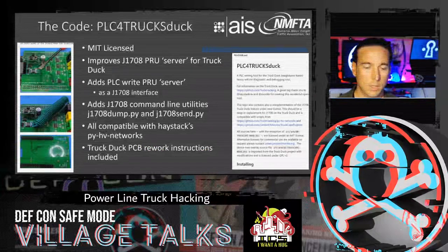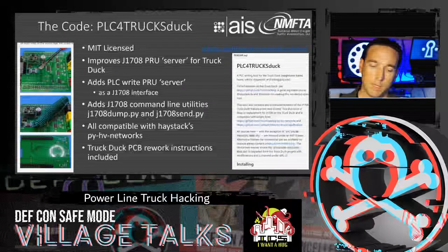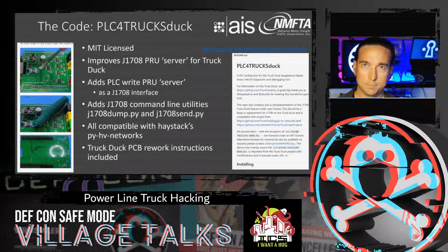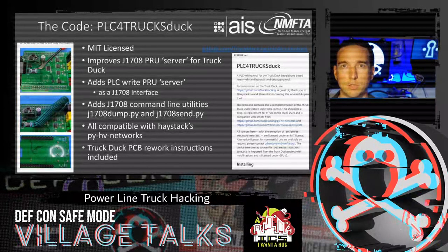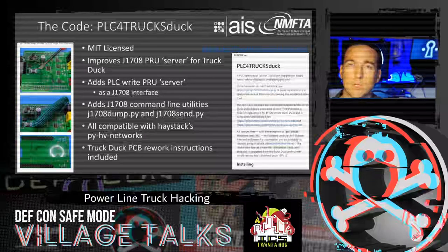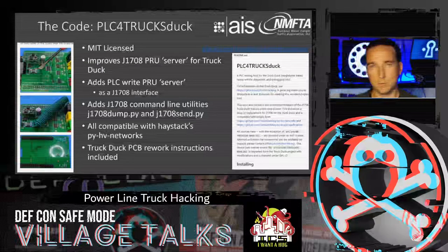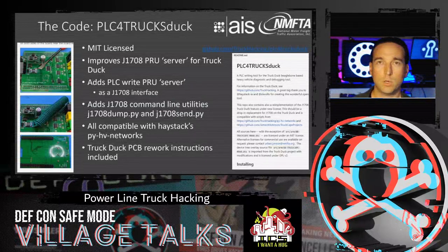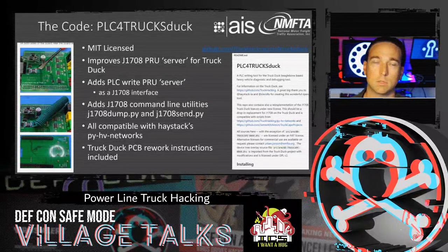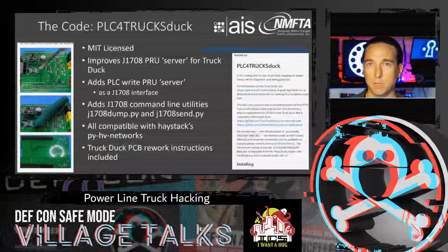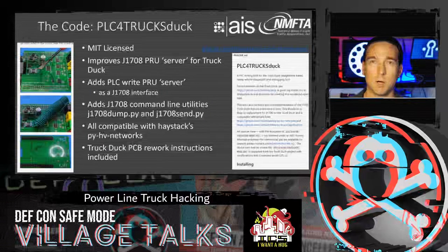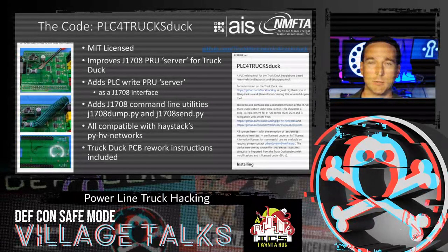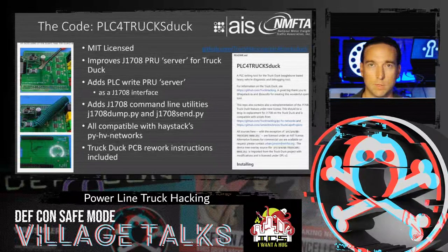The code is MIT licensed and available on GitHub as of today. It adds a new J1708 server — compatible with the existing TruckDuck setup that receives and sends UDP frames — but sends PLC signals instead. We also created simple command-line utilities (dump and send) compatible with the existing stack and Haystack's PI HV Networks Python programming interface.